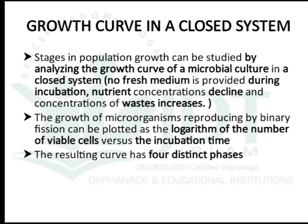Coming to the growth curve in a closed system. A closed system is a culture of microorganisms in which no culture media is added during the incubation period. We add a known number of microorganism suspension to culture media and study the changing number at different time intervals. If we plot the logarithmic number of viable cells versus incubation time, we get a graph with four distinct phases.